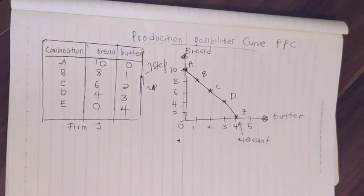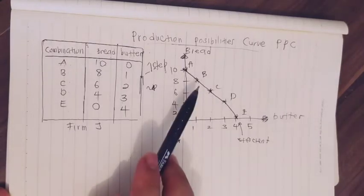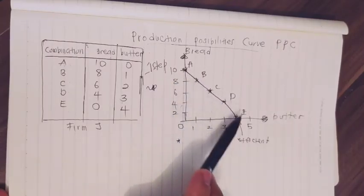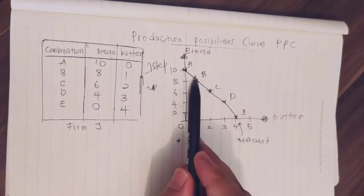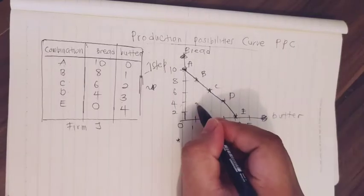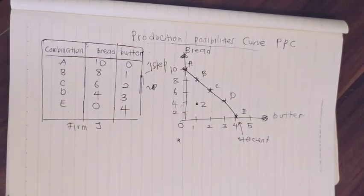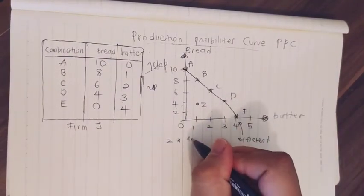Efficient here means that all resources that Firm J has are fully utilized. This is the case when they are choosing combination A, B, C, D, or E — that is, any point along the curve. However, below the curve — inside this area, let's call it point Z — we refer to that as inefficient.